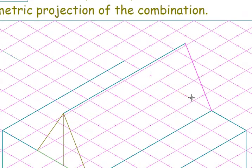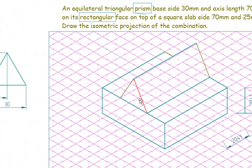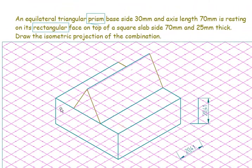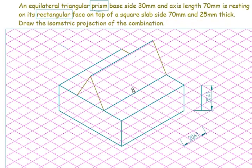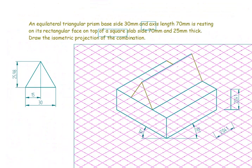This line is a visible edge. From here this is a thick line because it is kept over the square slab. Now I need to mention the dimensions. I hope you understood how to solve it.